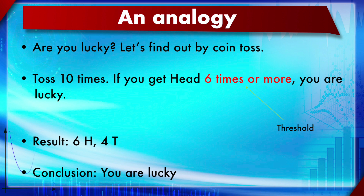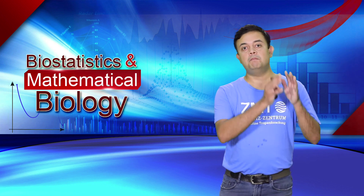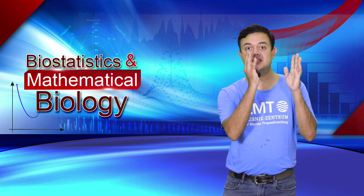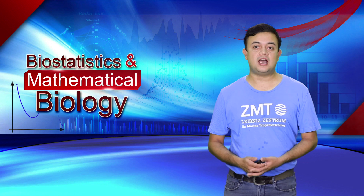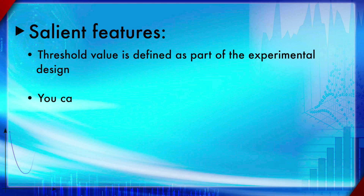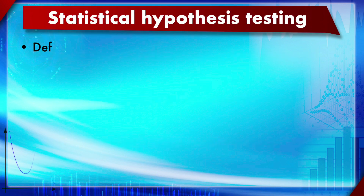You do the coin toss and get, for example, six heads and four tails — so you infer you are lucky. Had it been five heads and five tails, you would infer not lucky. There is a hypothesis defined based on an arbitrary threshold, and you test its validity. Crucially, you cannot change the threshold after seeing the data — changing it afterward is cheating.